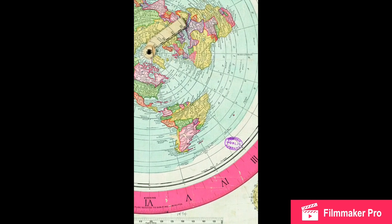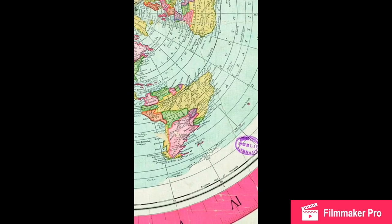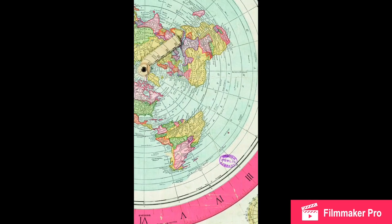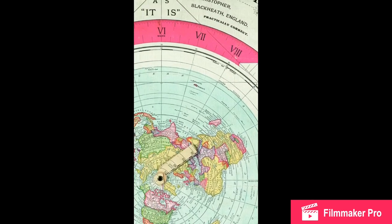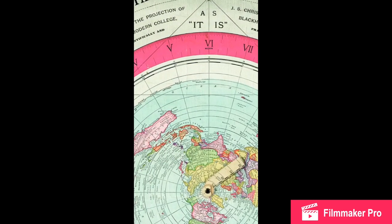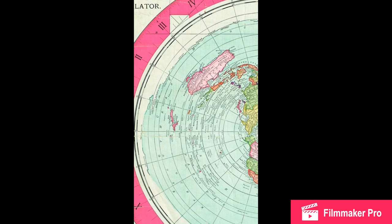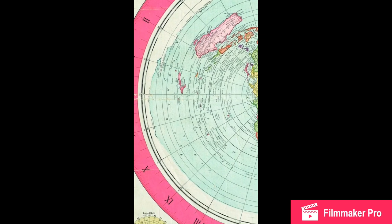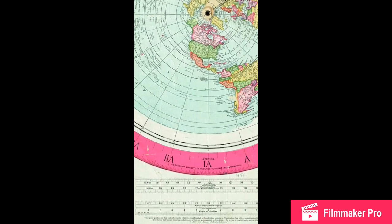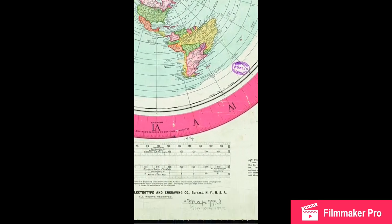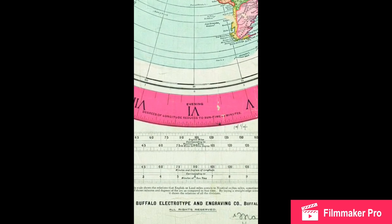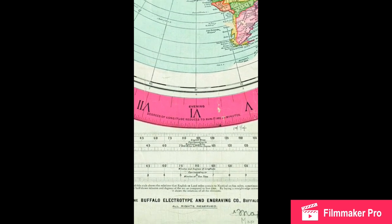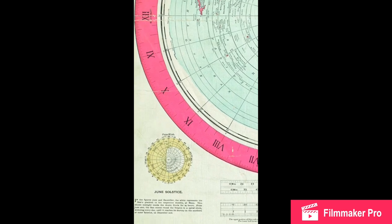We got South America. If y'all notice, we're missing some Antarctica, but look around the entire globe — on the Gleason map it shows Antarctica encircling the whole globe. This was not just some made-up map. This is a real deal map.